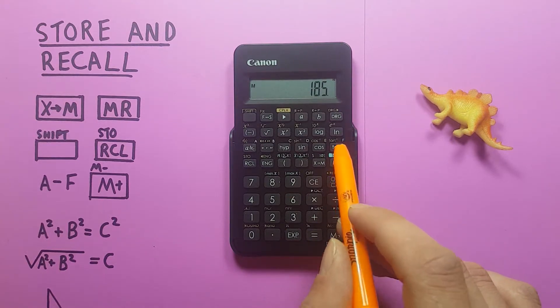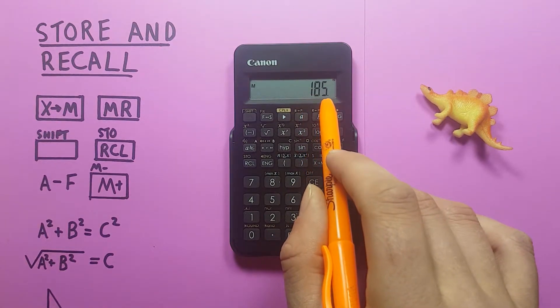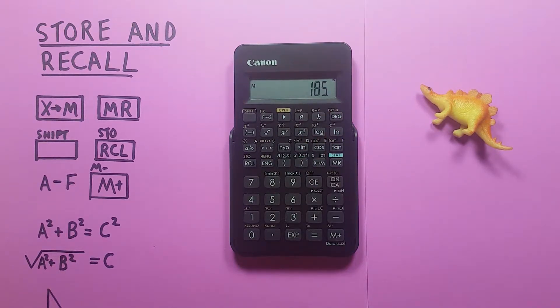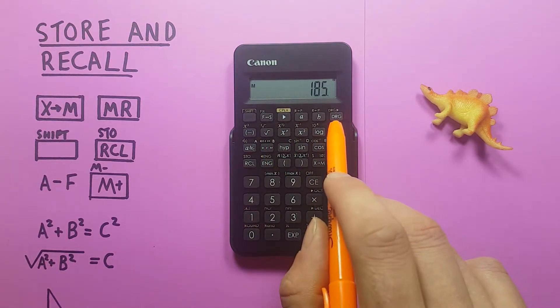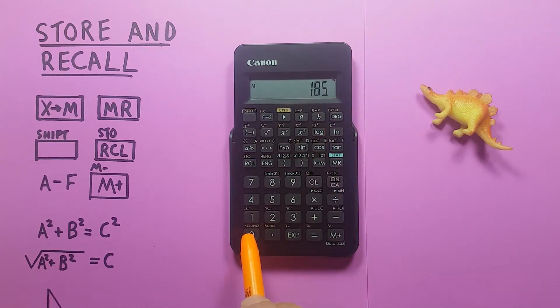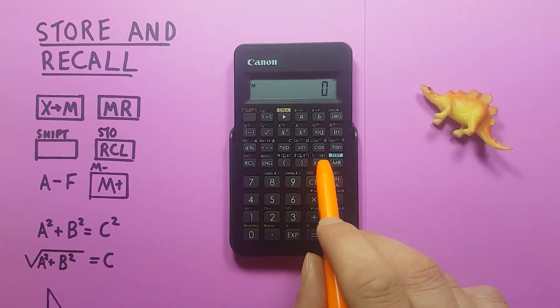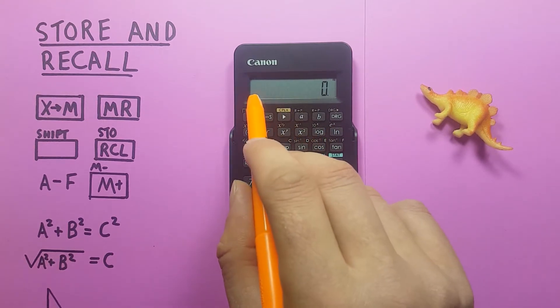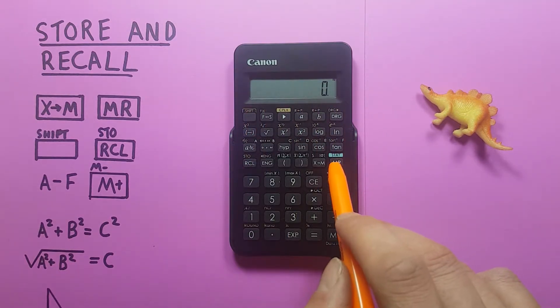MR and we now have 185. If we want to clear this memory slot we can place zero on the screen and press the X to M key. We see that M has disappeared and if we try to bring back the independent memory, nothing comes back.